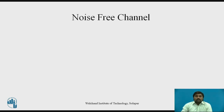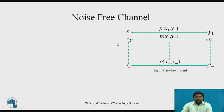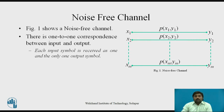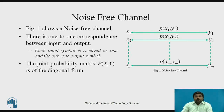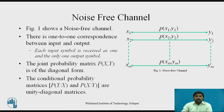Now, first consider the noise-free channel. Figure 1 shows a noise-free channel which has a one-to-one correspondence between input and output — x1 is connected to y1, x2 is connected to y2, similarly up to xm connected to ym. From this noise-free channel, you get two probability matrices: one is a joint probability matrix having a diagonal form, and another is a conditional probability matrix having a unity diagonal form.